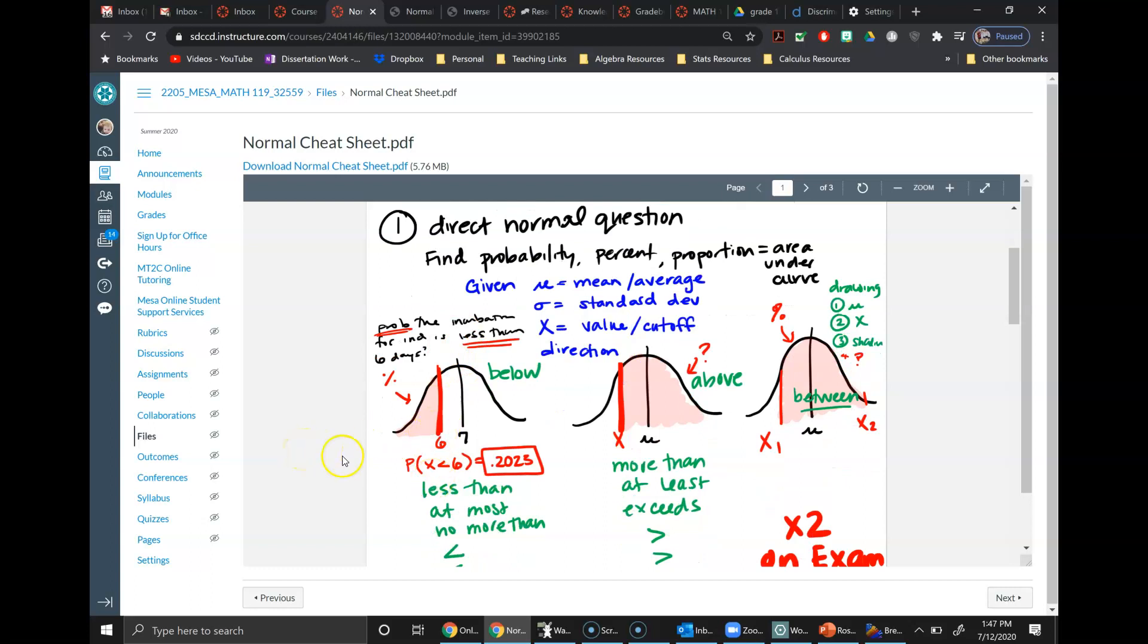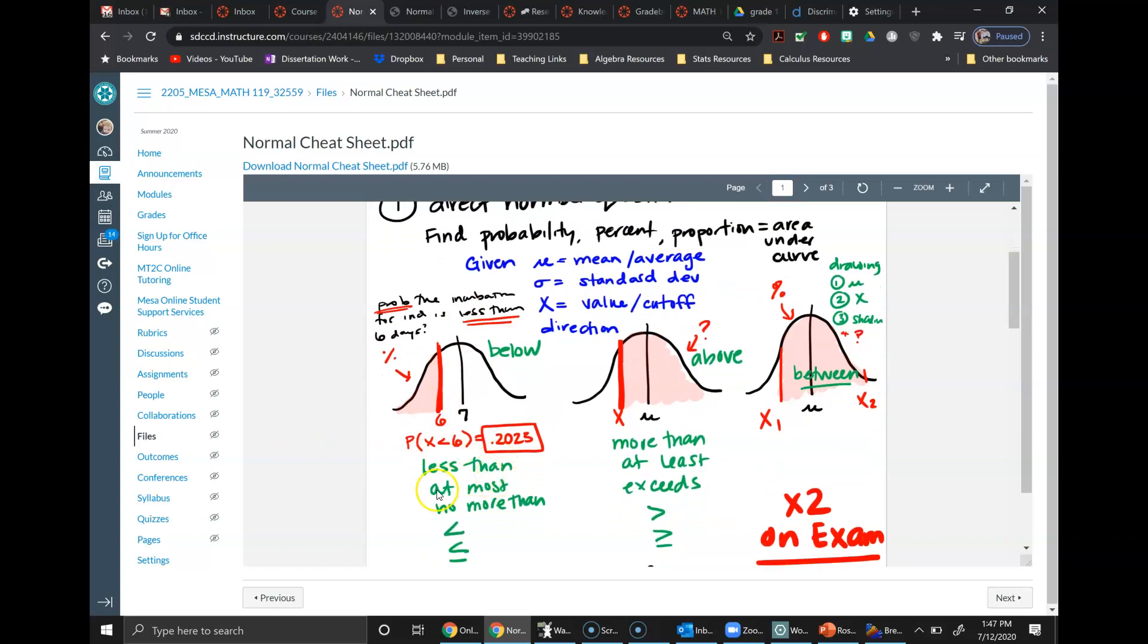And then you have some other keywords here: less than, at most, no more than. All of these are things to say shade to the left of the curve. If it was something with above, we have more than, all of this. And a note here, there are going to be two of these on the exam, so this is super important.